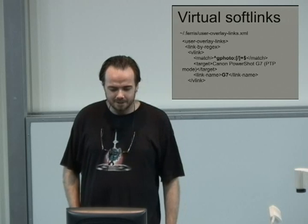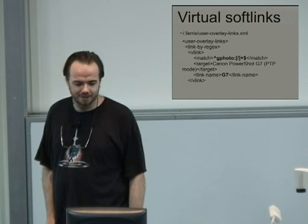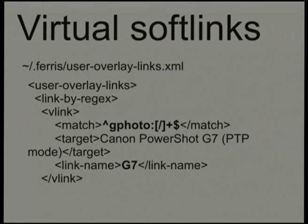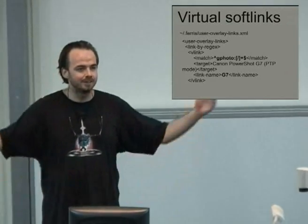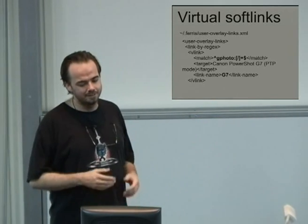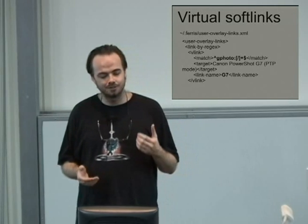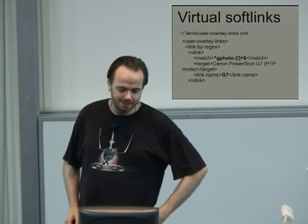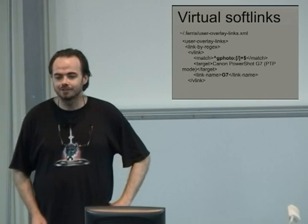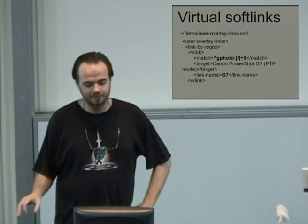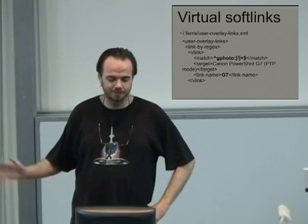Virtual soft links: everything becomes virtual and overlayable. I've been doing this for about 10 years, so a lot of this stuff — if things seem strange — there are reasons that have cropped up over that time. For GPhoto and UPNP, a lot of UPNP servers will offer you a 50-character ID with backslashes and weird characters, which just doesn't make it fun at a Bash shell. With virtual soft links, you can match against these horrifically long strings and say 'that is actually just box one' — make a virtual link so whenever you read that directory, 'box one' equals this horrendously long string.